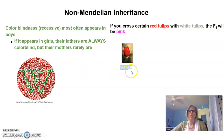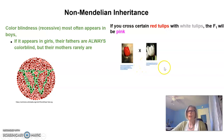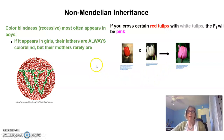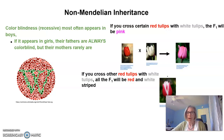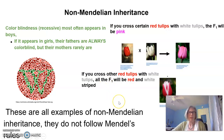Another situation: if you cross certain red tulips with certain white tulips, all of the F1 generation will be pink, and that's not what we expect from Mendel's laws. Also, if you cross other red tulips with white tulips, all of the F1 generation will be red and white striped, which is also not what you expect. These are all examples of non-Mendelian inheritance.